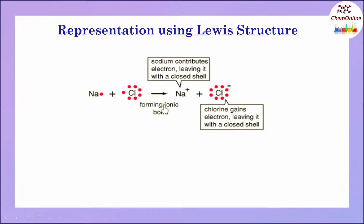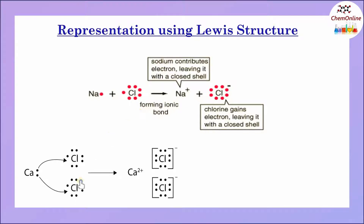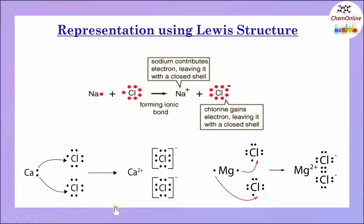Here you can see the representation using Lewis dot structures or Lewis structures. The dot represents the electrons in the outermost shell. Similar to sodium chloride, other compounds like calcium chloride and magnesium chloride are also ionic compounds formed by the transfer of electrons from calcium or magnesium to the chlorine atoms, forming Ca²⁺ or Mg²⁺ ions and chloride ions.